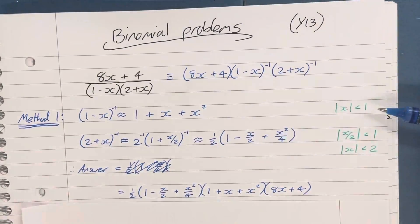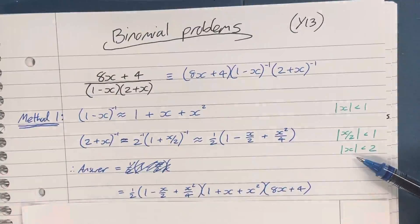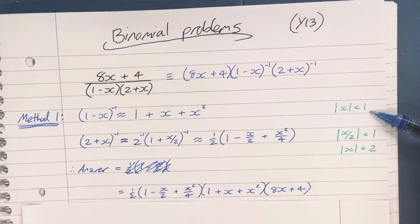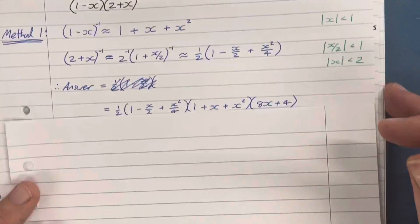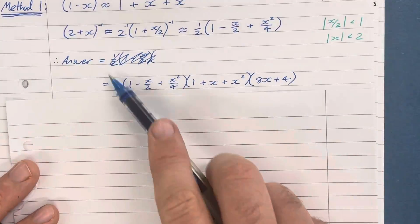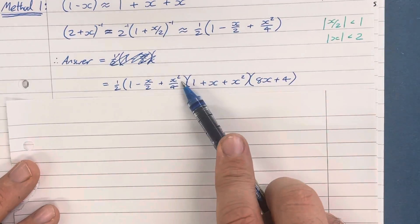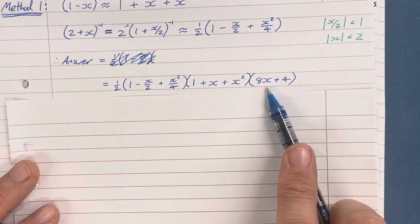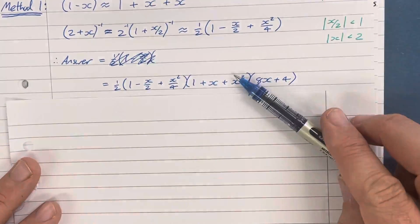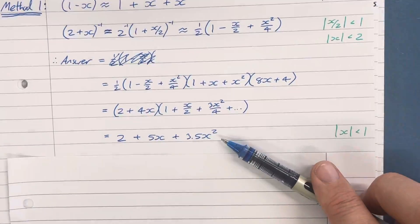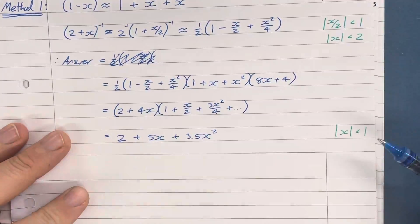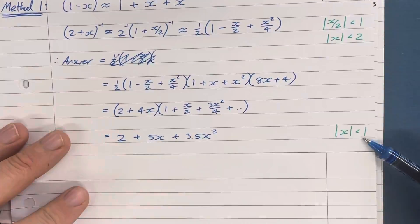The first expansion is valid for |x| < 1 and the second expansion was valid for |x| < 2. The more restrictive of those is |x| < 1, so this one takes precedence — both must hold for the overall expansion to be valid. Multiplying out and ignoring anything higher than a quadratic, we end up with 2 + 5x + 3.5x², valid for |x| < 1.